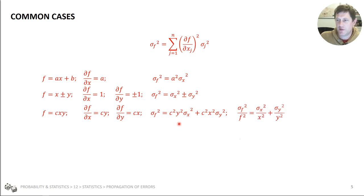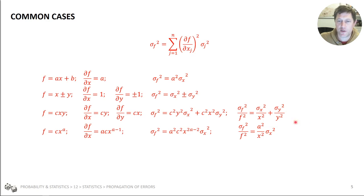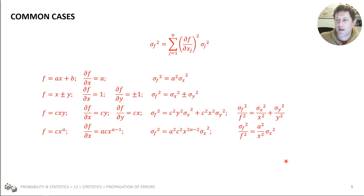In this case we might rewrite it by dividing through by F squared — dividing through by c squared X squared Y squared — to simplify it: the variance divided by F squared equals the variance of X divided by X squared, plus the variance of Y divided by Y squared. And so on for other functions — you can do this for all functions that can be differentiated and get useful results.